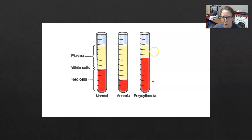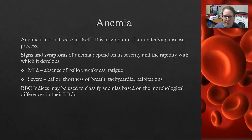Polycythemia is when there are more red cells than is normally anticipated. There's a video on polycythemia if you need to refresh on that. Anemia is not a disease in itself, but it is a symptom of an underlying disease process. For example, in the case of a GI bleed, the anemia could be evidence of the GI bleed.